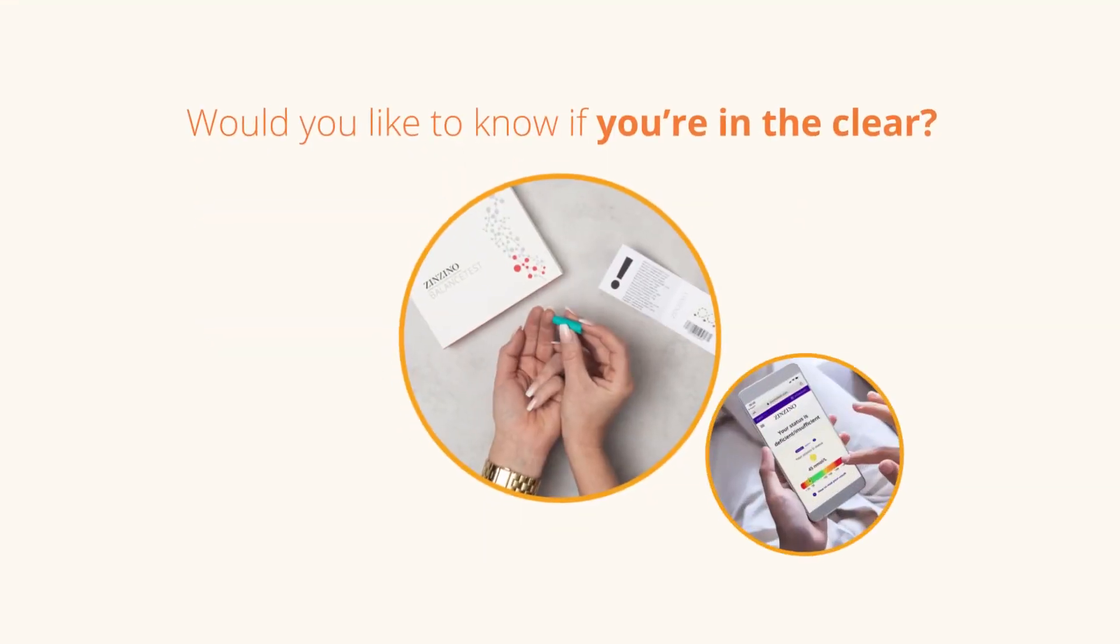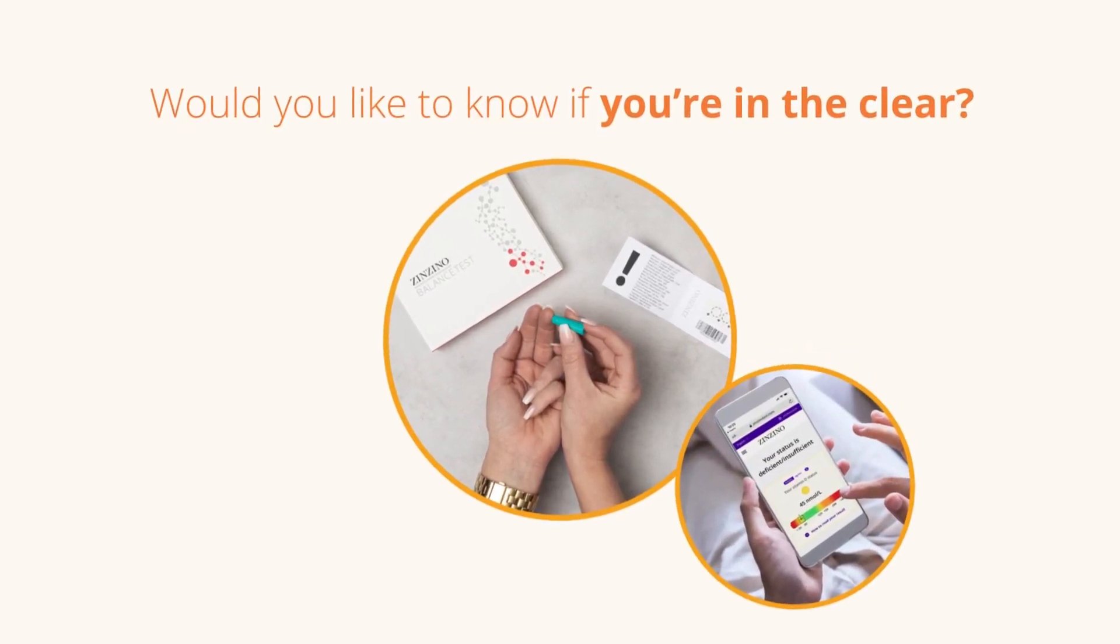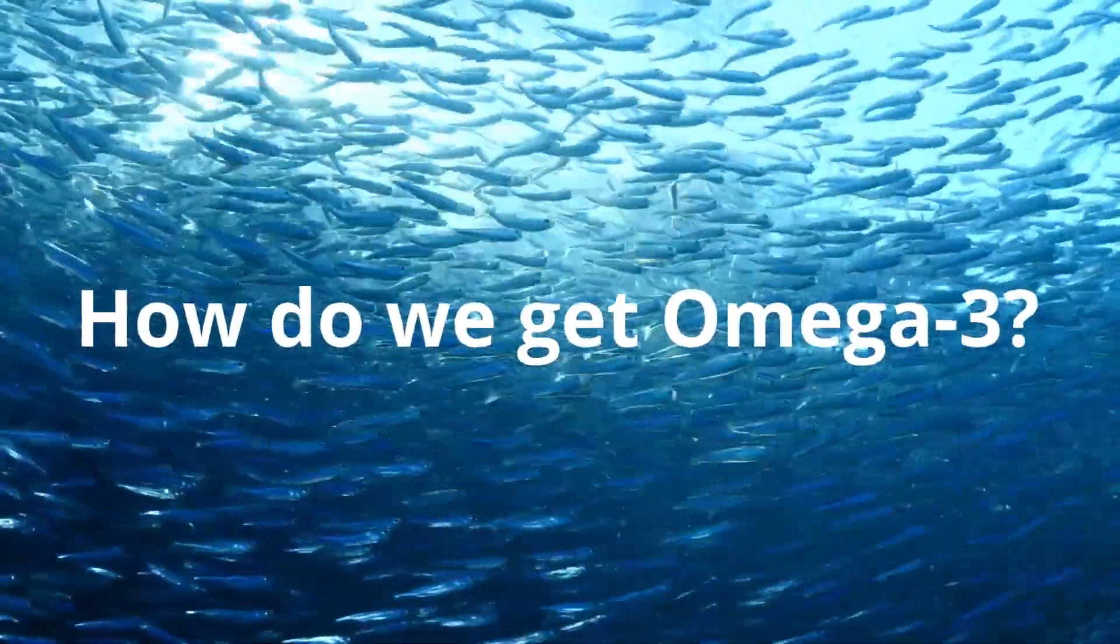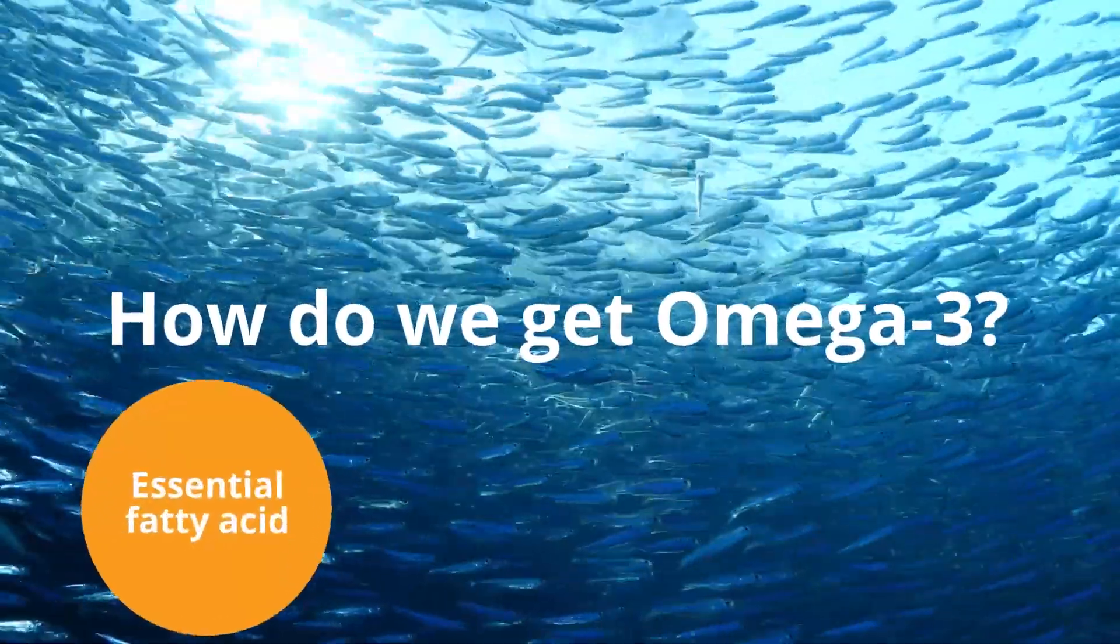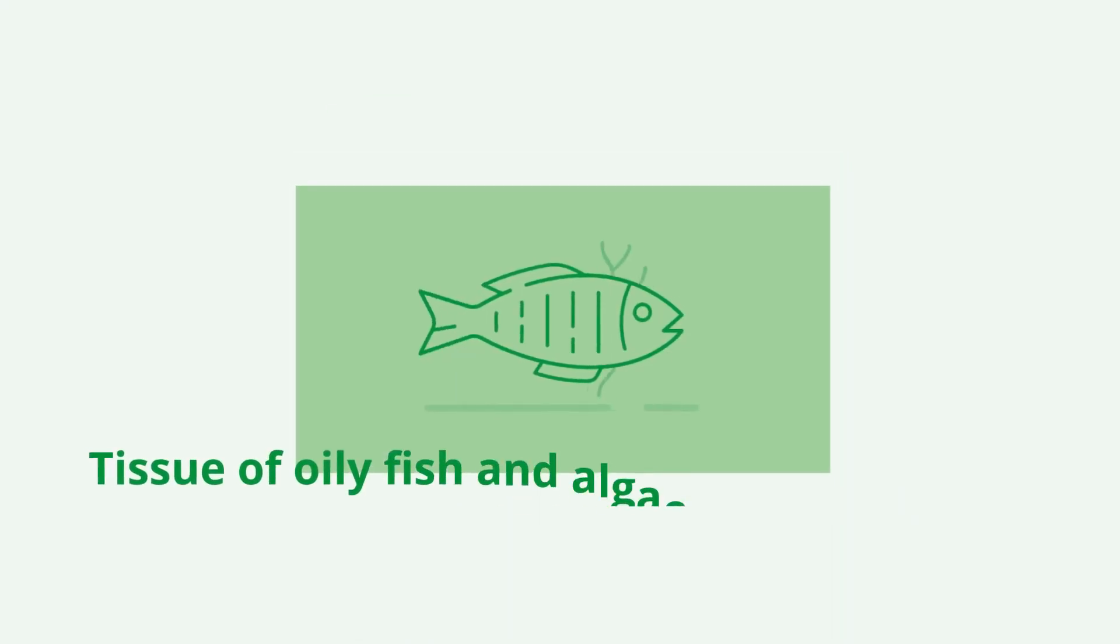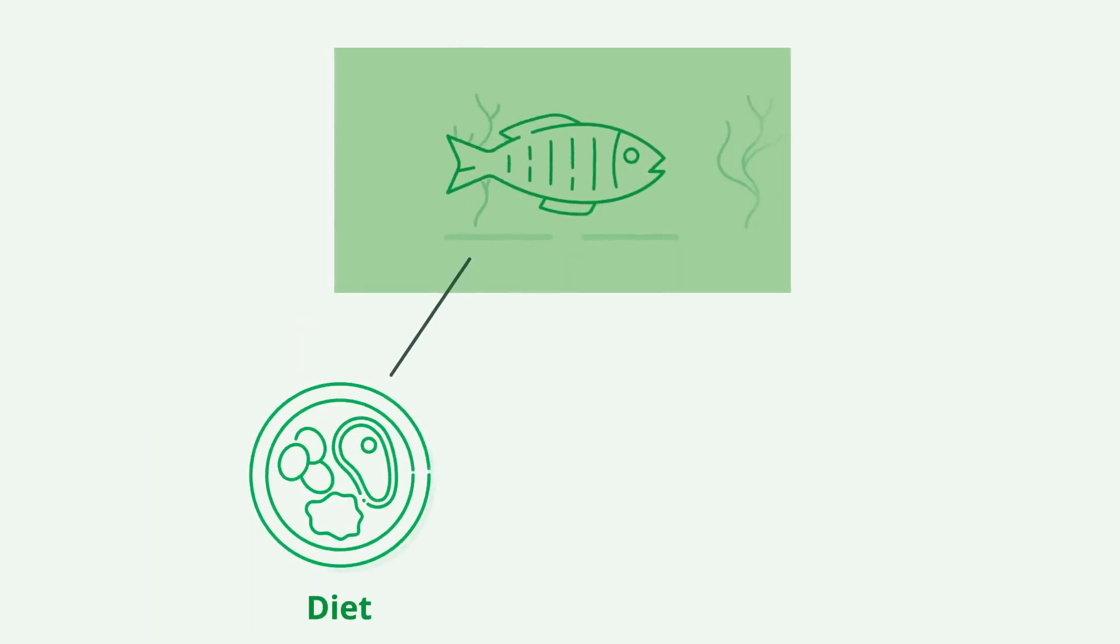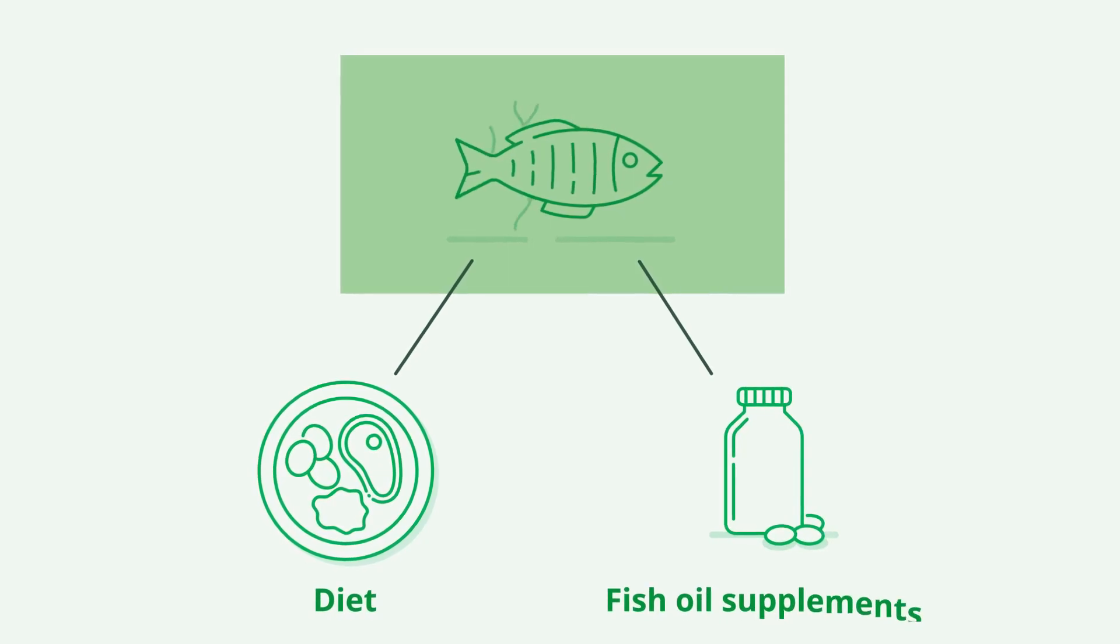A simple blood test will reveal whether you're good to go or if it's time to act. How do we get omega-3? Omega-3 is an essential fatty acid that our body cannot create on its own. It's most naturally formed in the tissue of oily fish and algae. We need to get our omega-3s from the food we eat or by taking supplements with fish oil.